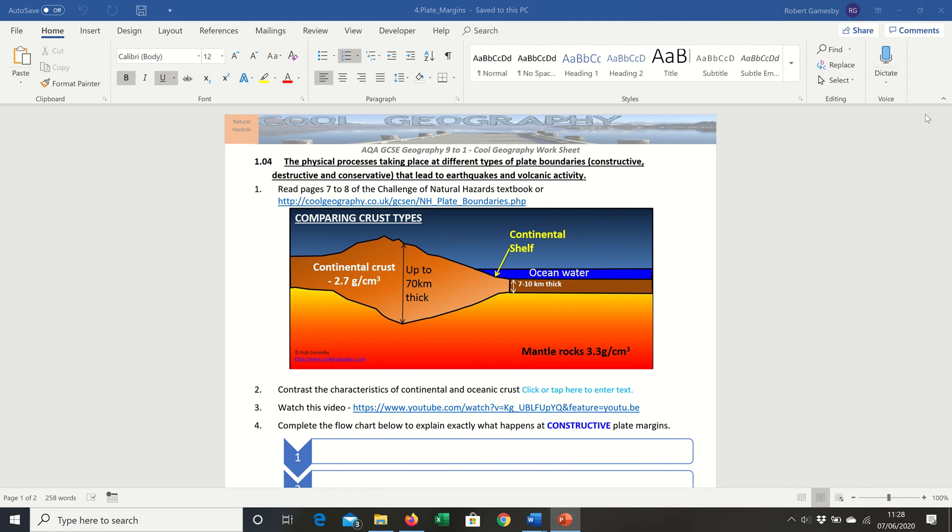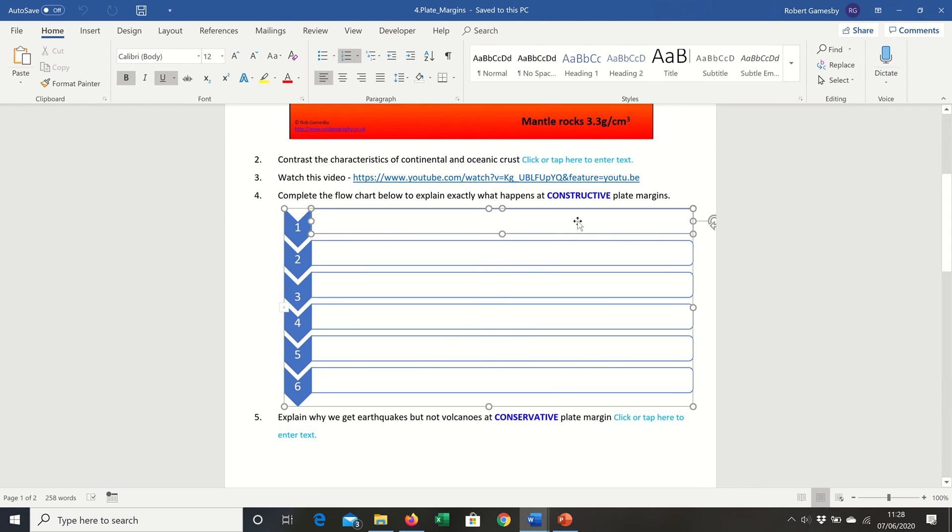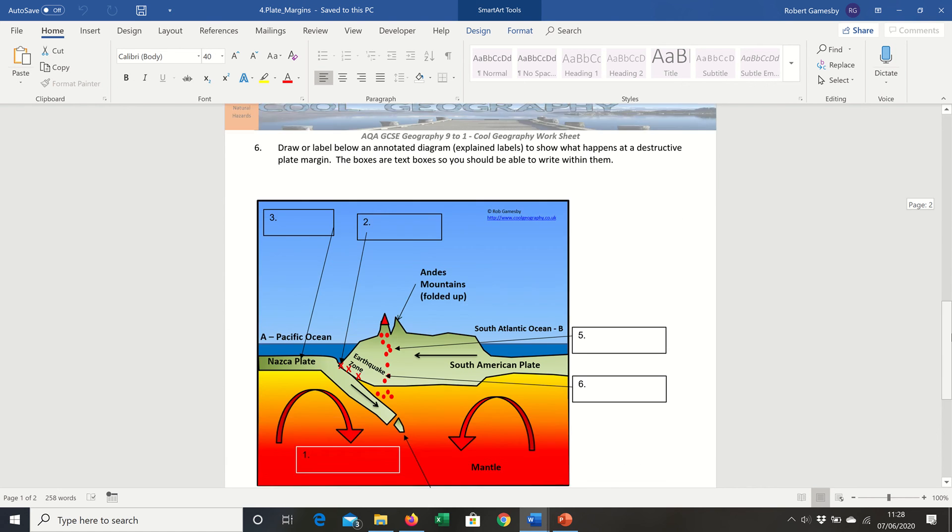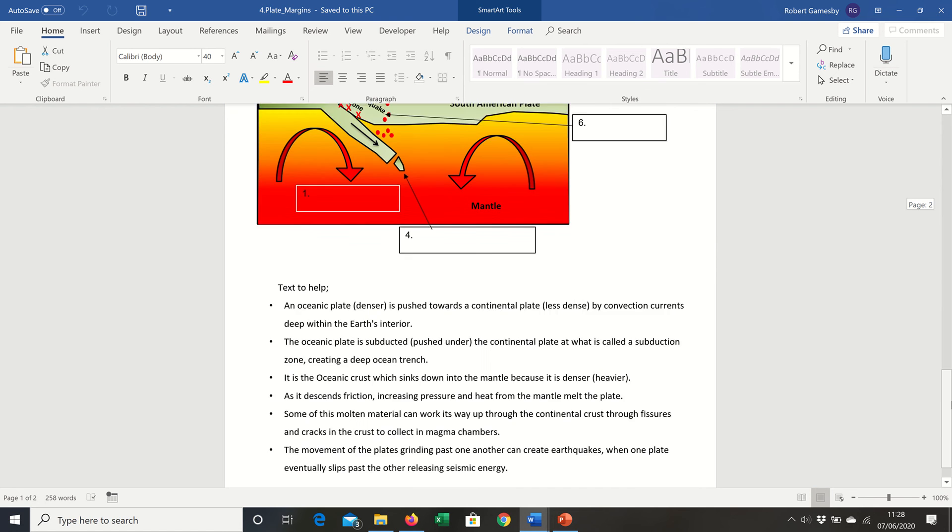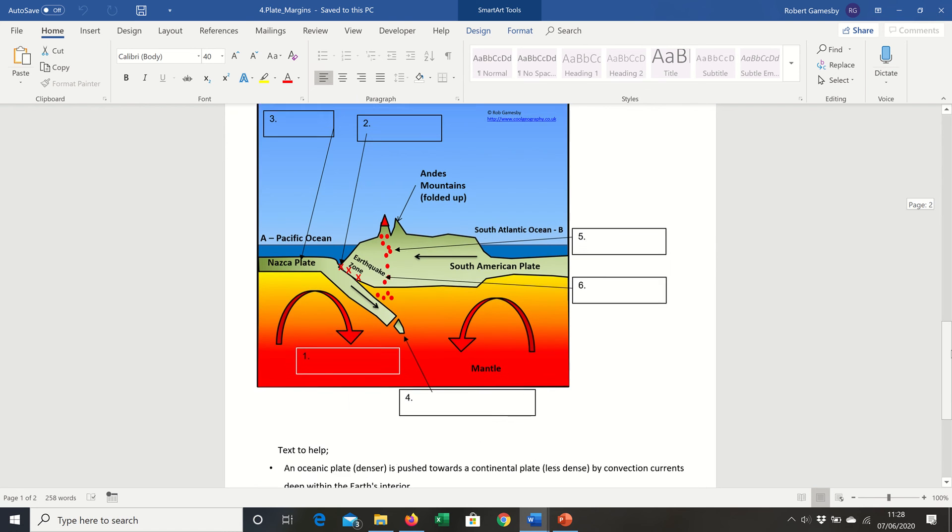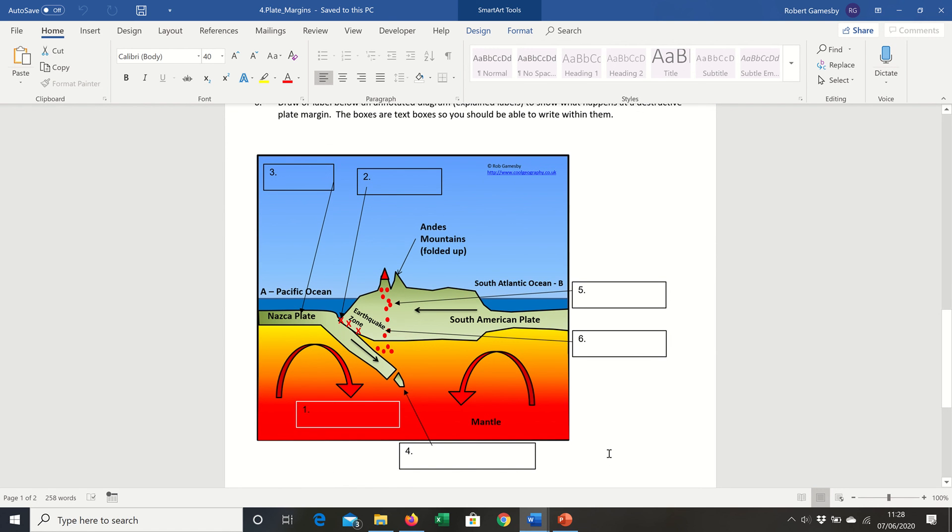So, the worksheet, you can contrast the characteristics of continental and oceanic crust there. There's the flowchart that you can just type straight in, in each one. And then, why do we get earthquakes but not volcanoes at conservative margins? And there's your label diagram and the labels are underneath, so you can type those into the various boxes above.